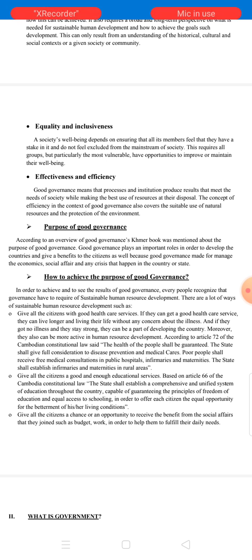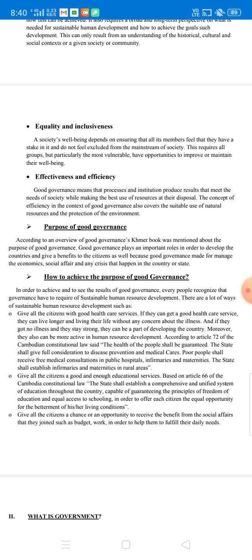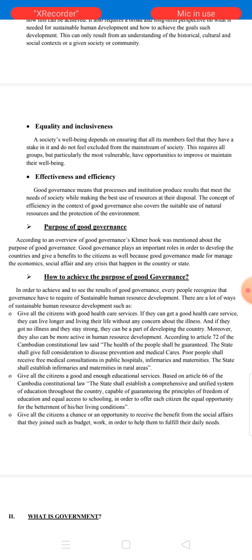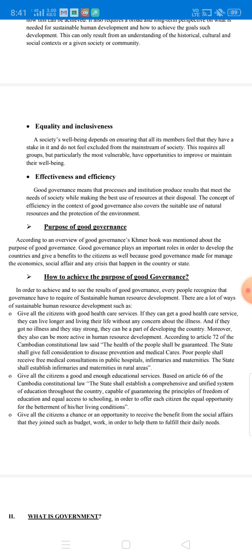I will explain to you all about the ways to achieve the purpose of good governance. In order to achieve and see the result of good governance, every person recognizes that governance has to require sustainable human resource development. There are many ways of sustainable human resource development, such as giving all citizens good healthcare services. If they can get good healthcare service, they can live longer and live their life without concern about illness. If they have no illness and stay strong, they can be a part of developing the country and be more active in human resource development.